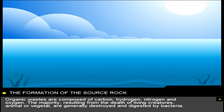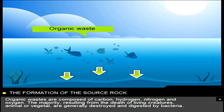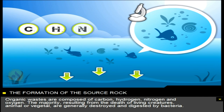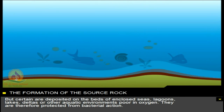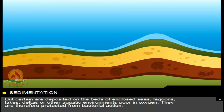Organic wastes are composed of carbon, hydrogen, nitrogen and oxygen. The majority, resulting from the death of living creatures, animal or vegetal, are generally destroyed and digested by bacteria. But certain are deposited on the beds of enclosed seas, lagoons, lakes, deltas or other aquatic environments, poor in oxygen.